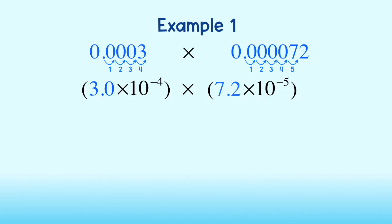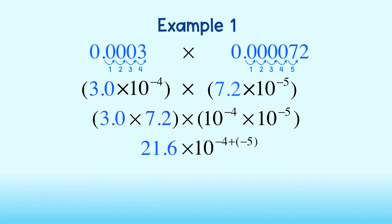Great. Since we are dealing with all multiplication, we can use the commutative property to rearrange and write this as 3 times 7.2 times 10 to the negative 4th times 10 to the negative 5th. 3 times 7.2 is 21.6, the properties of exponents tells us to add exponents to get 10 to the negative 9th.